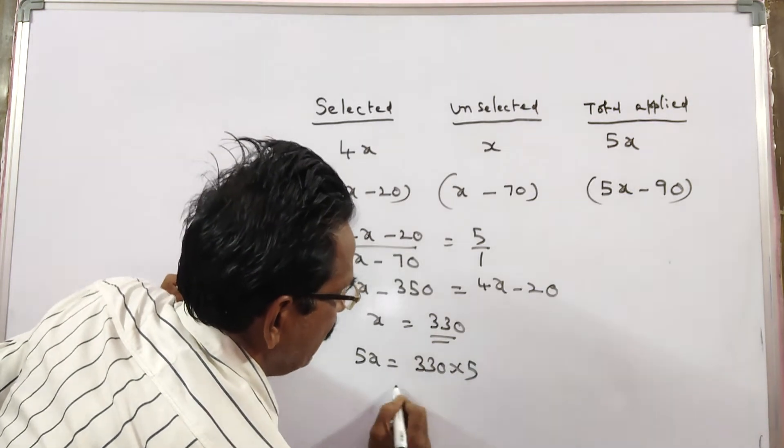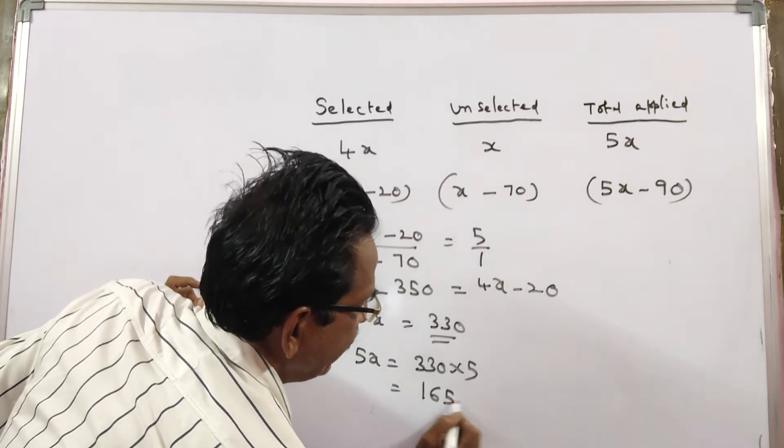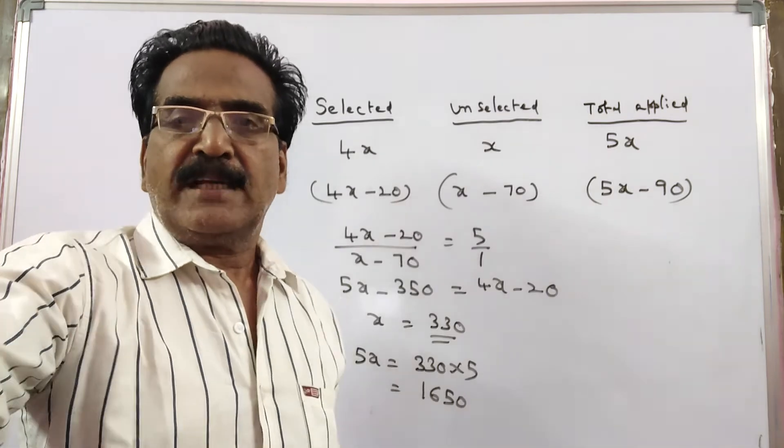330 into 5, that is equal to 1650 is your answer, friends. Okay friends, thank you.